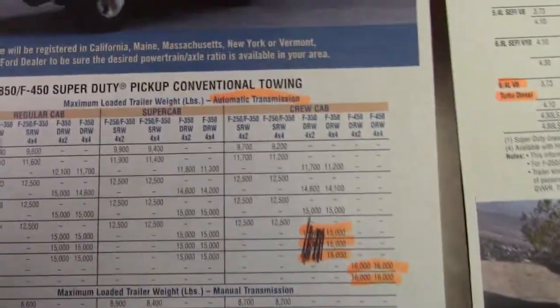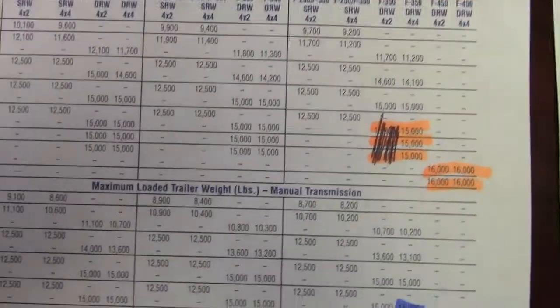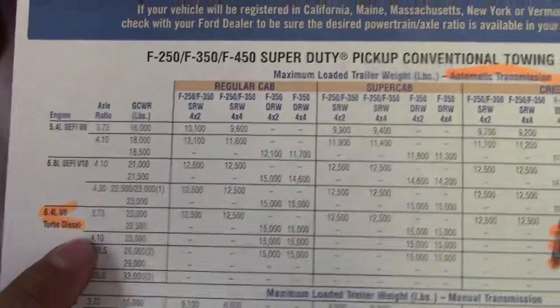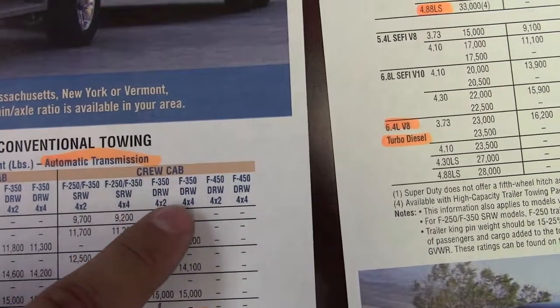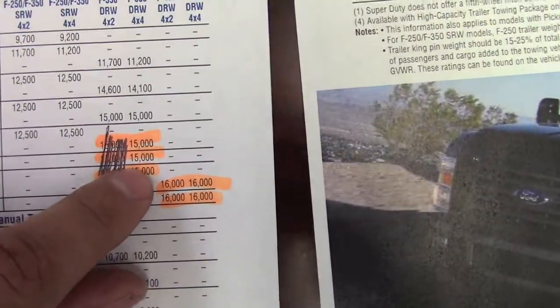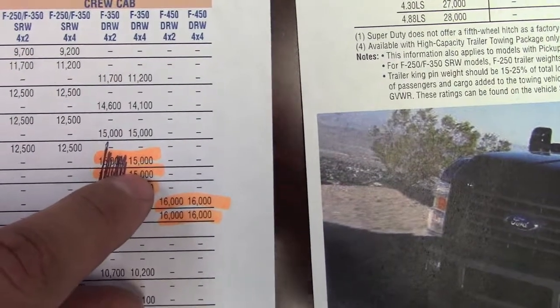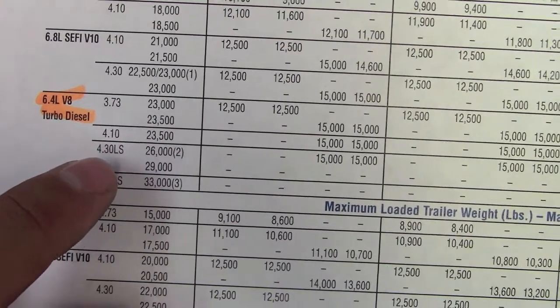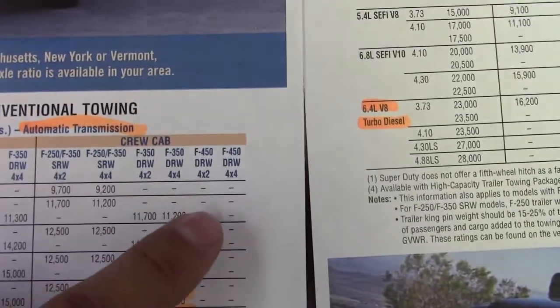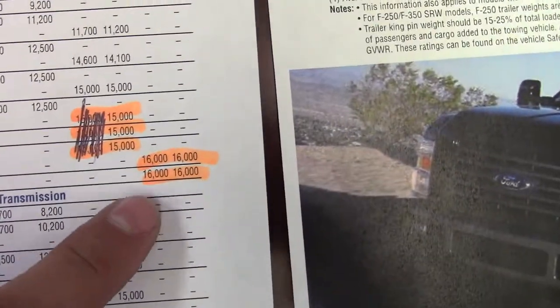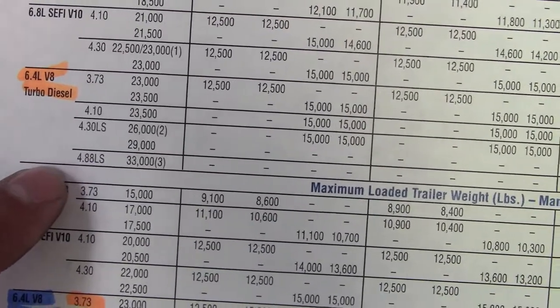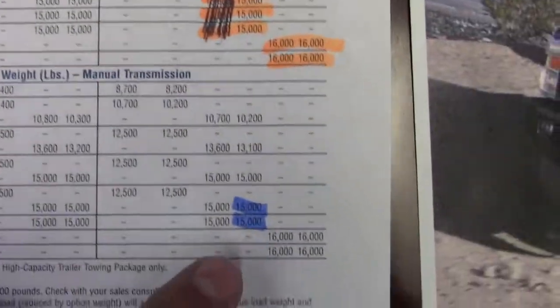For the bumper pull, there's not really a big difference between automatic and manual. Going with a 6.4, crew cab, dual wheel 4x4, conventional towing is 15,000 pounds. That is the same whether you have the 3.73, 4.10, or 4.30 LS — which stands for limited slip. On the 450 4x4, you have 16,000 pounds, and that's for both the 4.30 LS and 4.88 LS. The manuals actually have the same numbers all the way across, which is quite interesting.